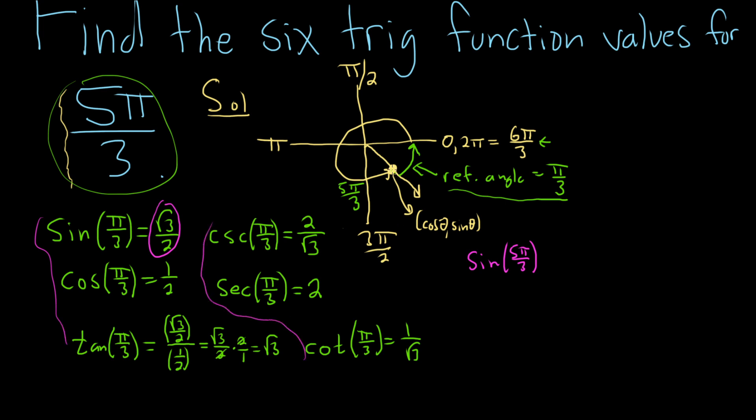Because sine is the y-coordinate and we're down here in quadrant 4, y is negative. So this is going to be equal to negative square root of 3 over 2. That's our first answer.